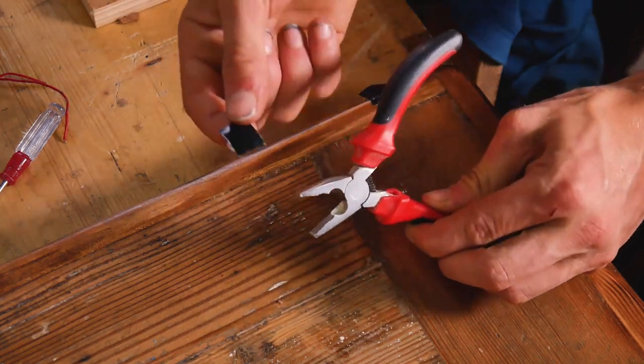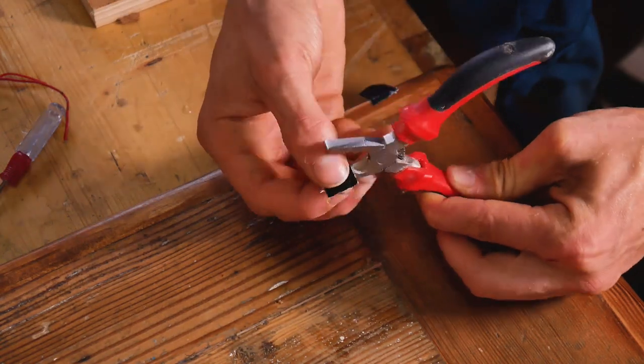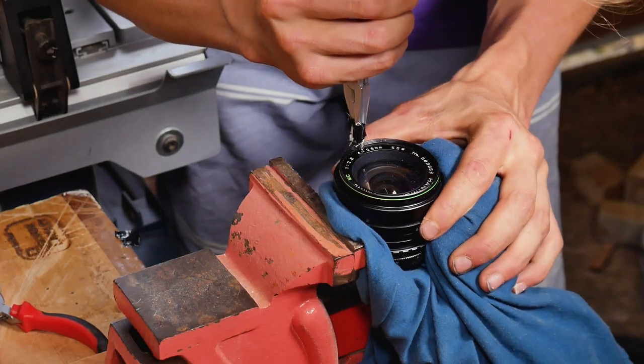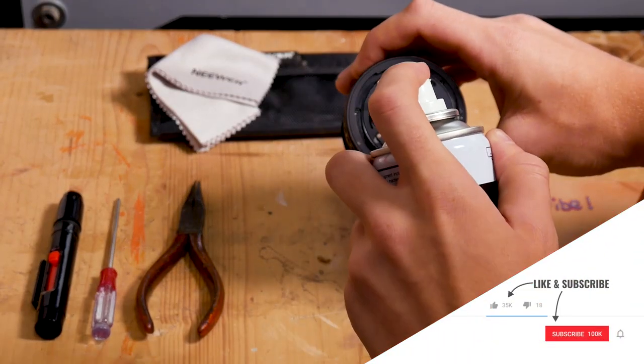I stuck duct tape onto my pliers so I did not scratch the paint on the filter thread. As you can see, it was bent. Now we just gave the lens a quick clean.